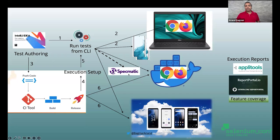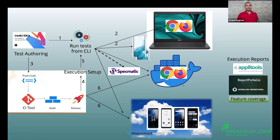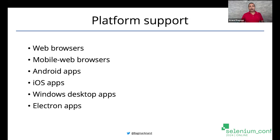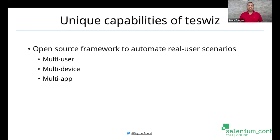It also uses Specmatic for intelligent stubbing. When your tests run from the command line, the same thing happens from your CI as well — it's a very consistent way of running your tests with predictability and determinism. TestWiz supports running tests across all different types of browsers, Android, iOS apps, Windows desktop apps, and Electron applications. The unique capabilities include automating real user scenarios across multiple users, multiple devices, and multiple apps.